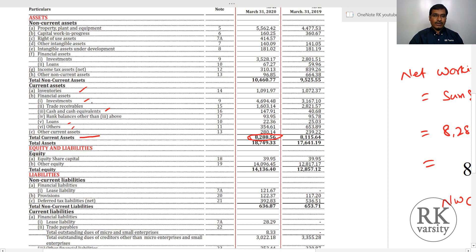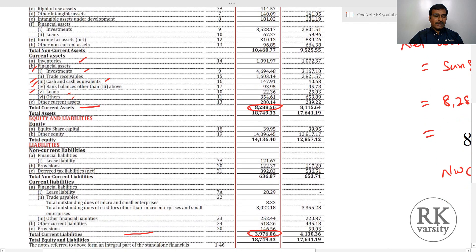Investments represent the excess amount that your firm has invested in other companies, which yields a return. Similarly, loans — secured or unsecured — given to employees or others also earn money. In these cases your amount is not blocked at all. Cash equivalents are similar. Even in current liabilities, items like lease liabilities, other financial liabilities, and other current liabilities may not represent amounts that are actually tied up.